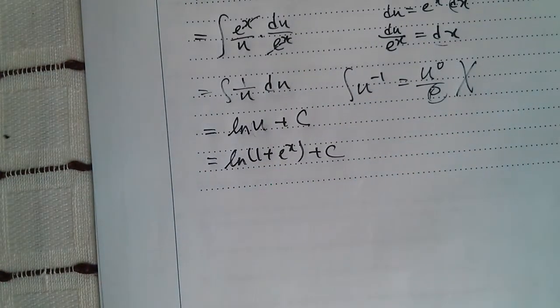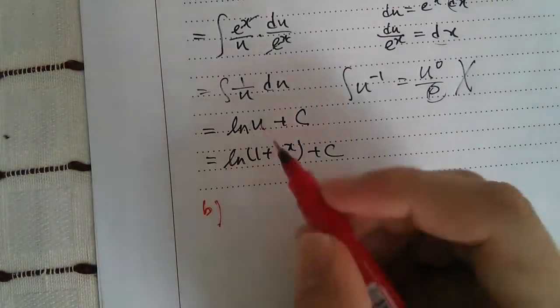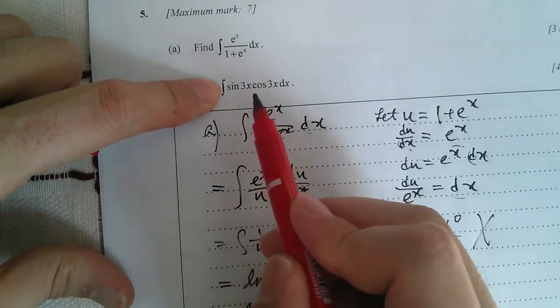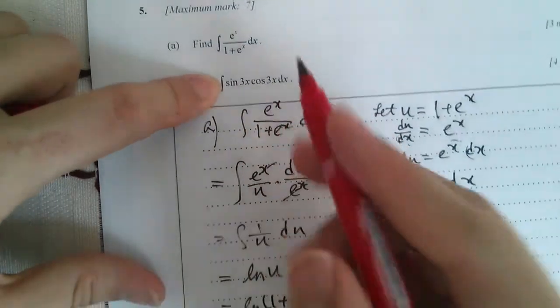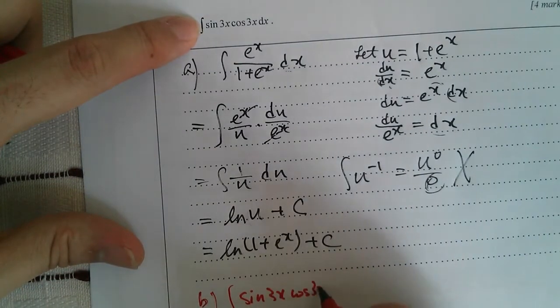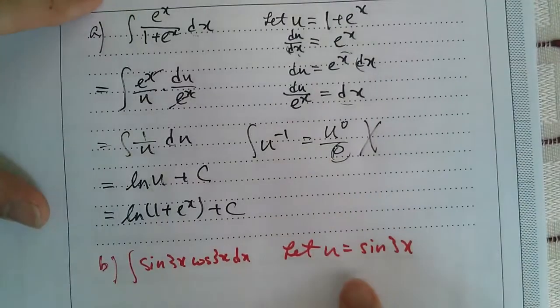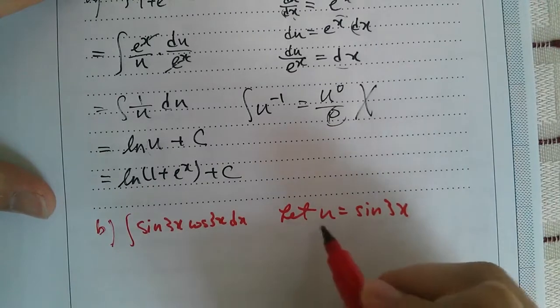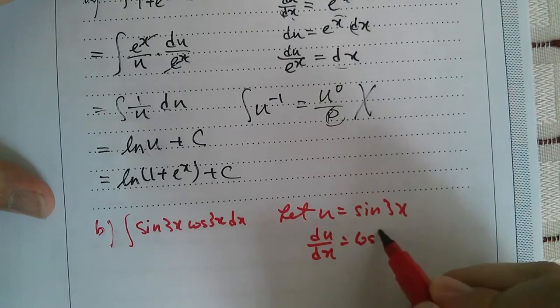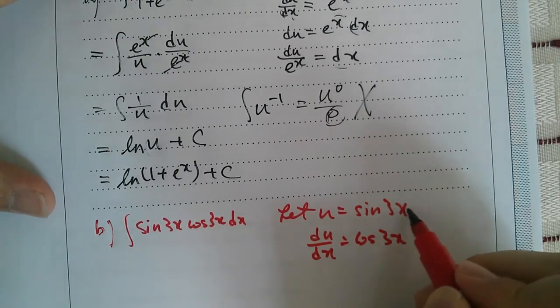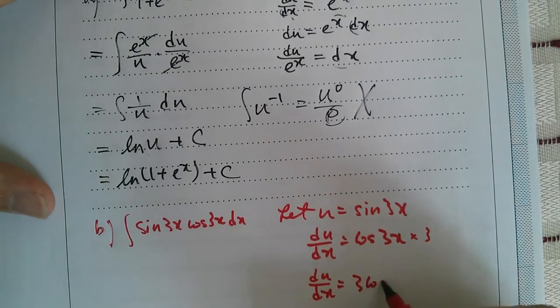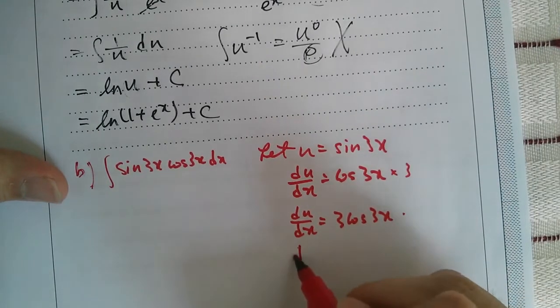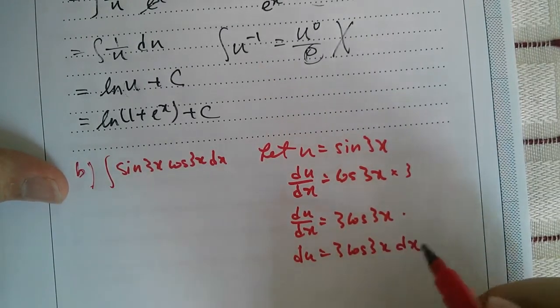Part b can also be done by substitution. The question is sin 3x cos 3x. One of the substitutions could be sin 3x because if you differentiate sin 3x there would be some cos 3x coming out. Just let u be sin 3x, then differentiate this. du/dx equals cos 3x, and by chain rule we differentiate the inside 3x, which is 3. So 3 cos 3x. We multiply dx to the other side and then divide, so dx = du over 3 cos 3x.